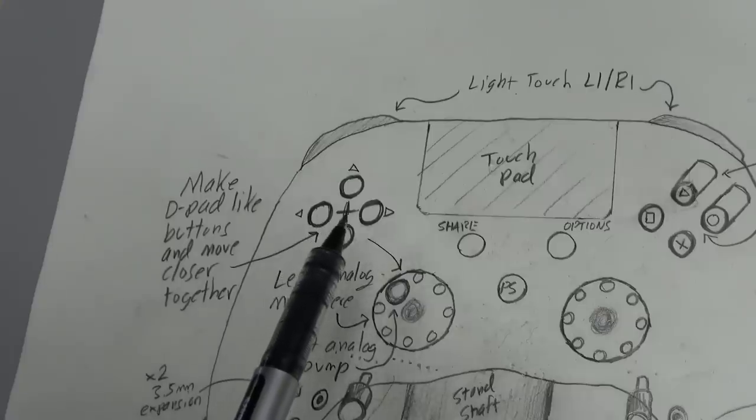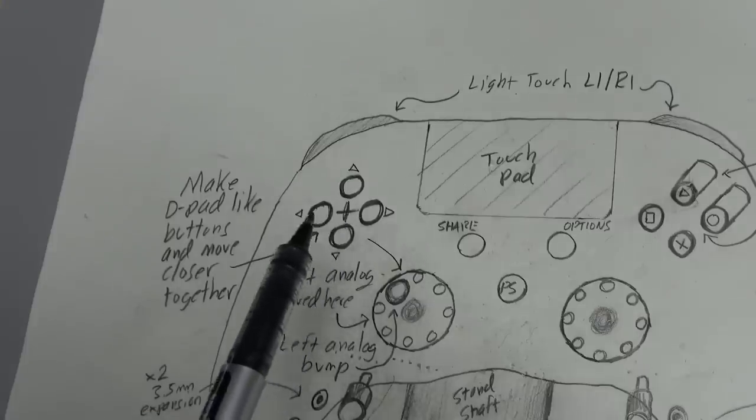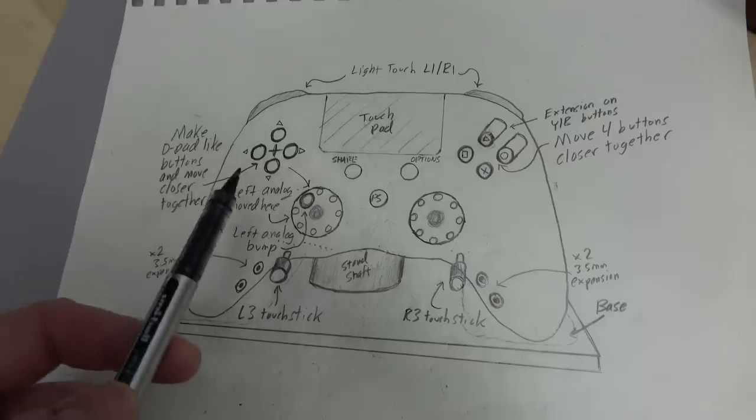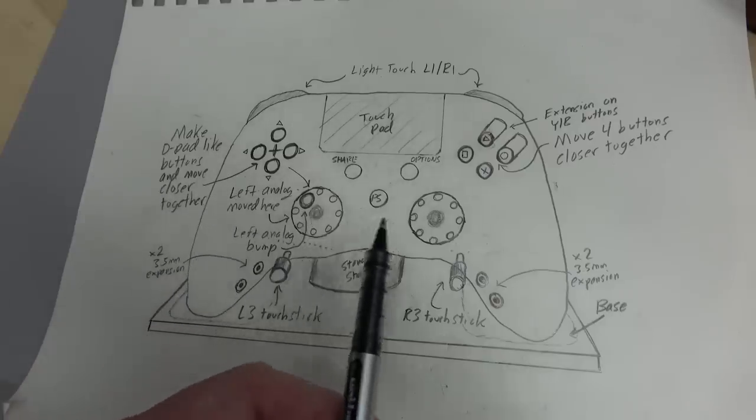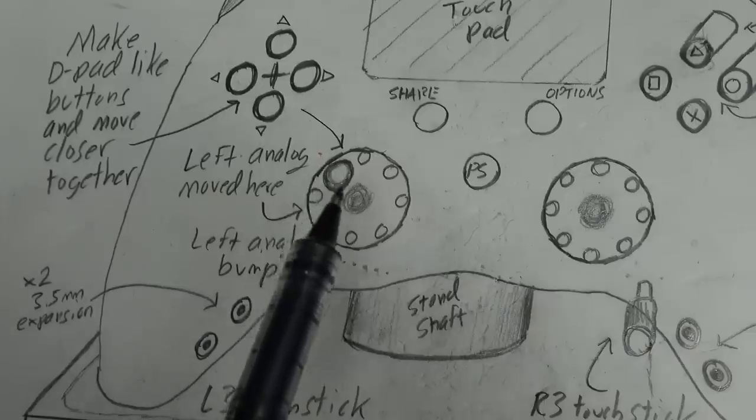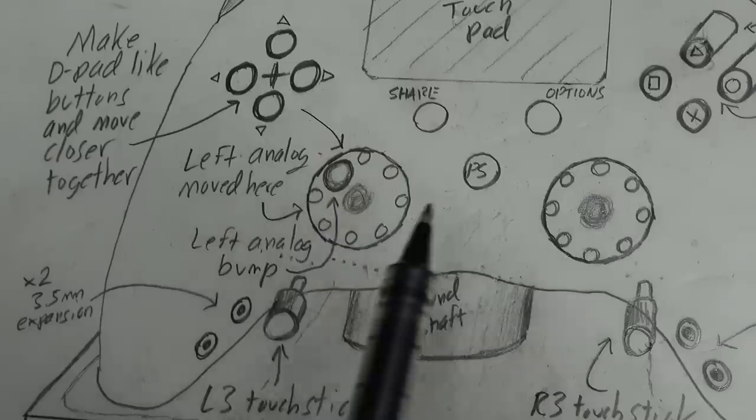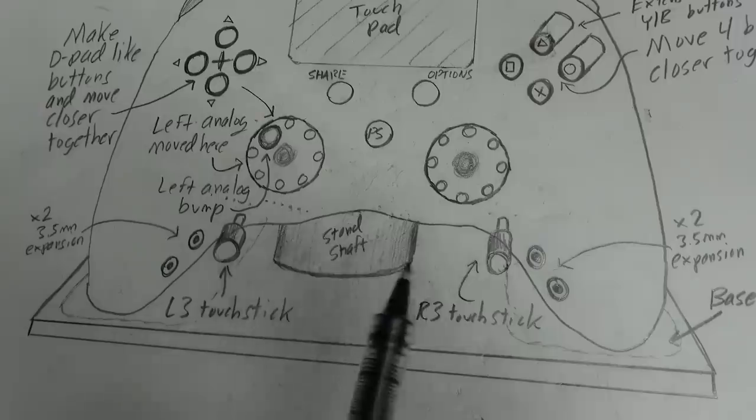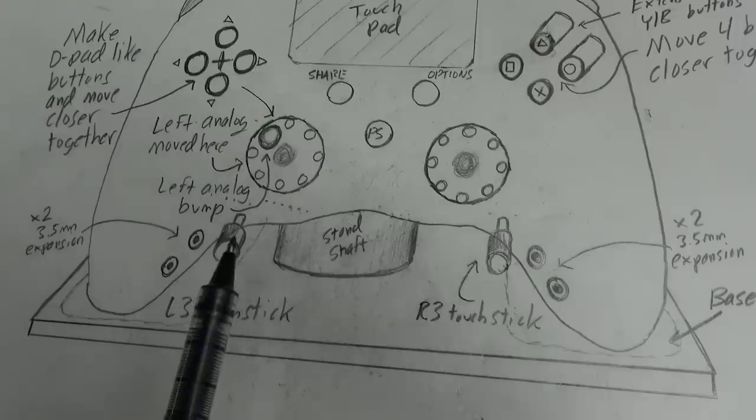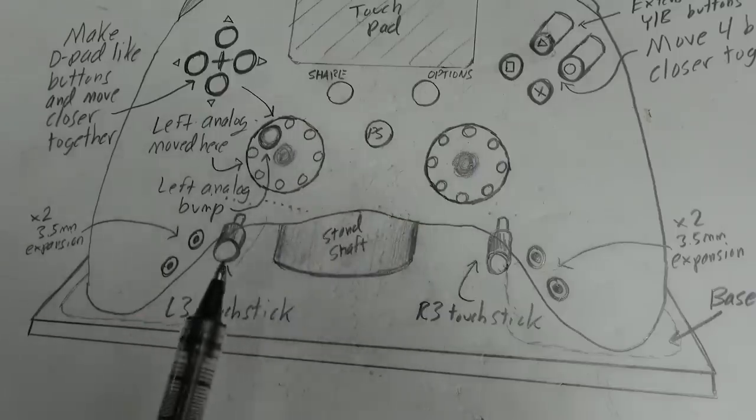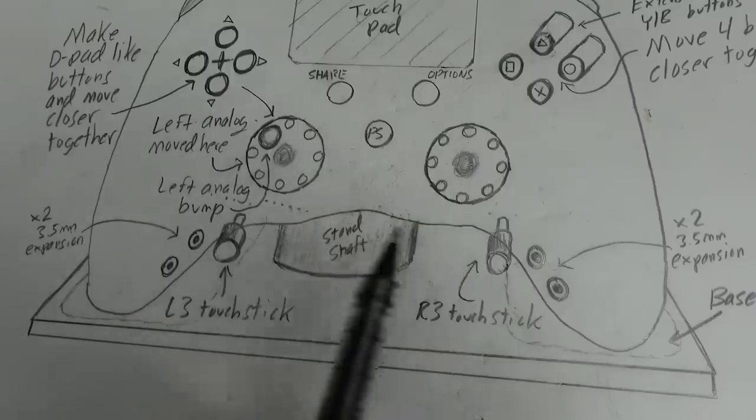Same thing with the D-pad, make it more like the Nintendo Switch where instead of a cross you have four little buttons closer together. Two analog sticks in the PlayStation configuration. The one on the left will have a little nub on the upper left corner. Down here we want two metallic things sticking out of the controller—these will be touch sensitive controls. Instead of L3/R3 clicking into the stick, you can just lightly tap either one of these rods.